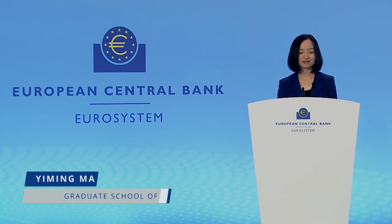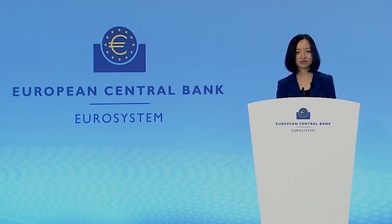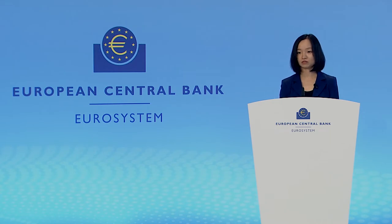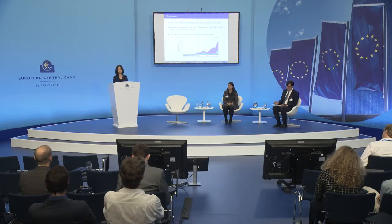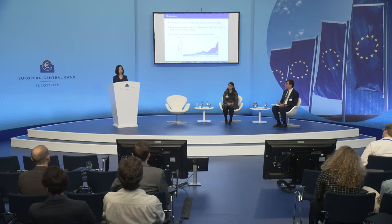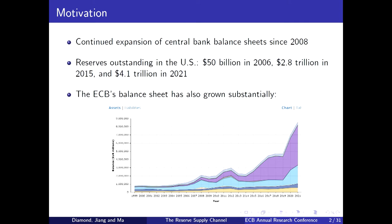We started by observing a very large and continued expansion of central bank reserves around the world. In the US, reserves outstanding before the crisis were very low at just $50 billion in 2006. They jumped up during the financial crisis to $2.8 trillion in 2015, and again following COVID interventions to $4.1 trillion in 2021. For the ECB, the balance sheet has grown substantially, reaching above $8 trillion in 2021.